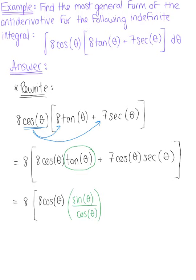This allows us to simplify those cosines, they'll cancel each other out. We do the same thing with our second term here. This will be plus 7 cosine of theta, and how can I rewrite secant of theta? We know that secant of theta is equivalent to 1 divided by cosine of theta.